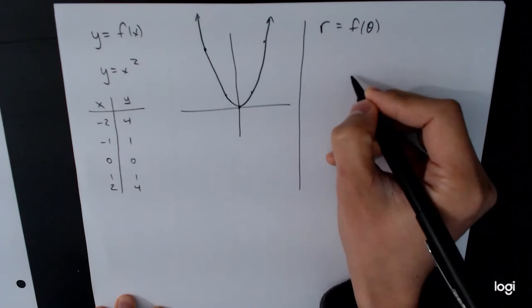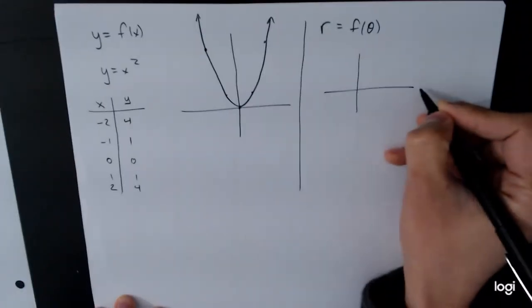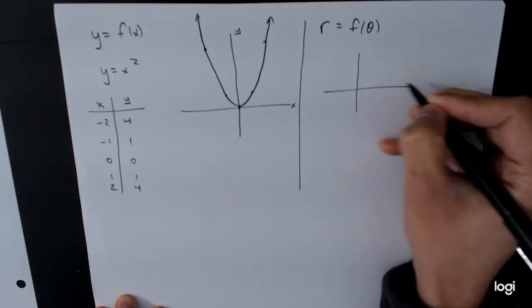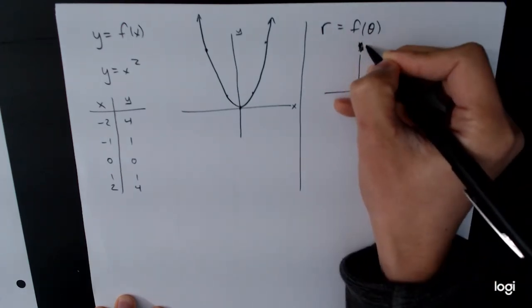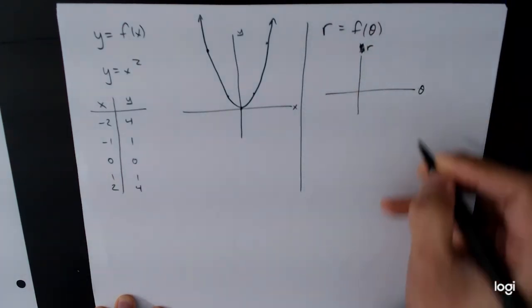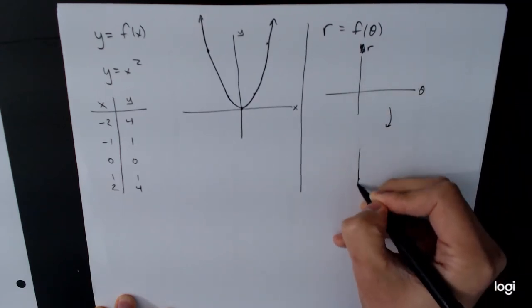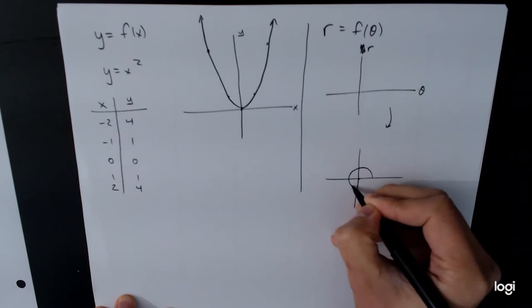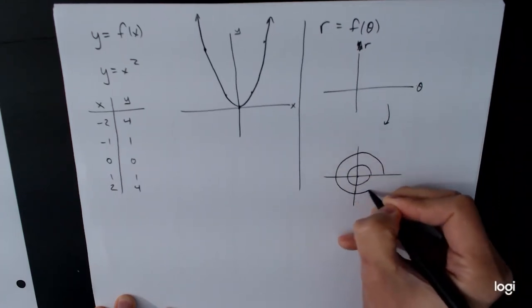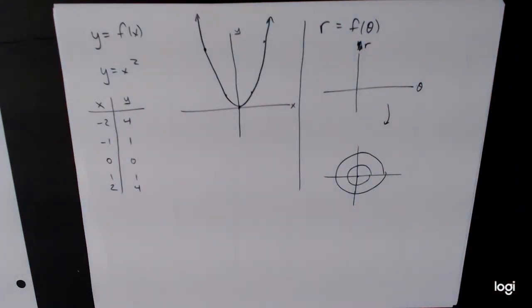But the basic idea is that we're going to start off by graphing this as if we were doing it in rectangular coordinates. So here's our r axis, and here's our theta axis. And then we're going to take these points and then turn that into something that is in polar coordinates. Now one of the big mistakes students make with this is that they try to go too fast. They try to skip too many steps, and it doesn't make any sense to them because they're not doing all the work.